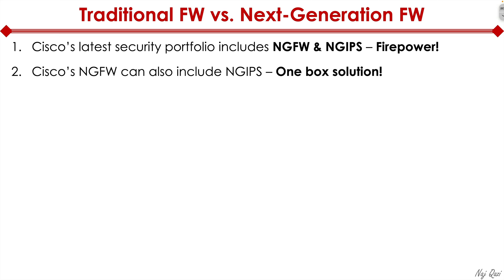Cisco's next-generation firewall can also include next-generation IPS — it's a one-box solution. Many years ago, back in the early and mid 2000s, you had a separate firewall, and when IDS and IPS came out, that was another piece of hardware you had to buy. They were both separate physical devices. Over the years, Cisco has merged and combined the next-generation firewall and next-generation IPS functionality into a single box.